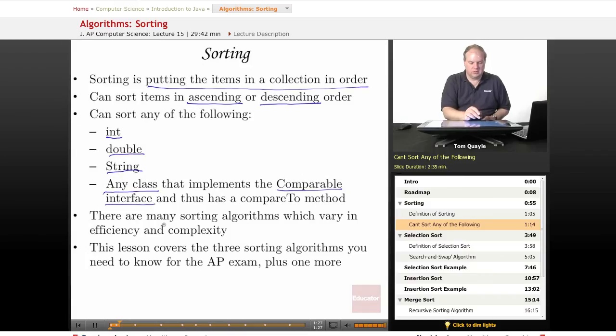The Comparable interface has a method called compareTo. And compareTo results in a value being returned to the calling program that indicates whether one value is less than, greater than, or equal to a second value. We've seen this in the lesson on strings. Strings implement the Comparable interface and therefore have a compareTo method, and we can compare two strings to one another.